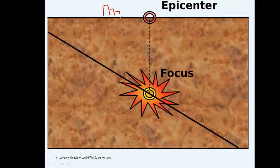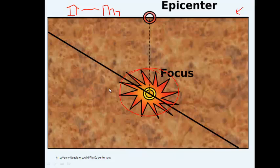If this is the surface, we'll build a little city over here — a little town, maybe some houses. If this is the surface of the crust, earthquakes usually occur underground. We have one plate here and another plate here — this looks like a convergence where one is sliding under the other. The location where the earthquake actually occurs underground is called the focus.